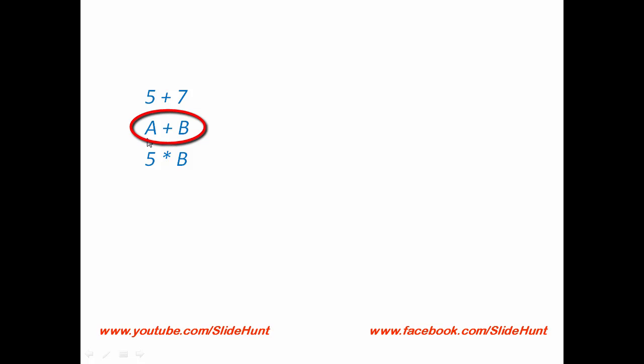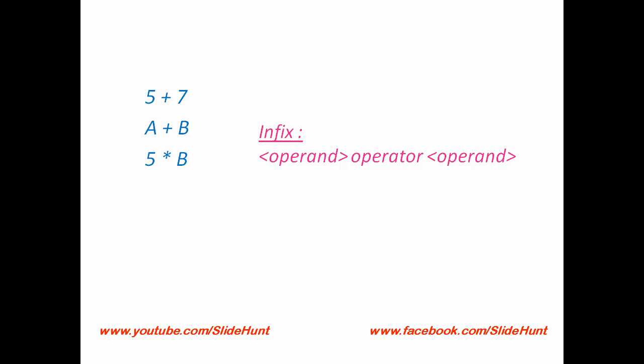Here we have written three expressions and all three follow a common structure — there is an operator between two operands. In the first expression, there are two operands, 5 and 7, both constants, and the operator symbol is plus. In the second expression, two operands a and b are variables and the operator symbol is plus. In the third expression, first operand 5 is a constant and second operand b is a variable, and the operator symbol is star or multiplication. This is the most common way of writing an expression and is called infix notation, where an operator is placed between two operands.